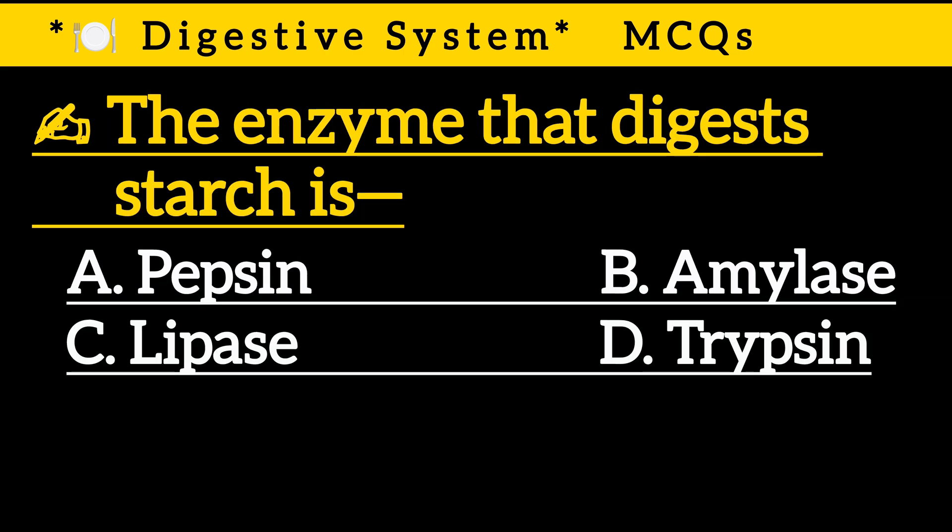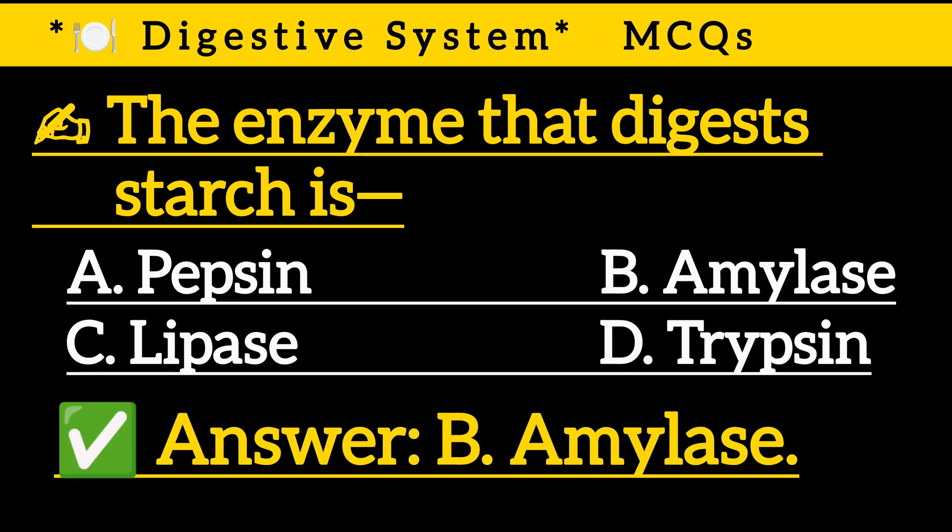Question 3: The enzyme that digests starch is — Option A: Pepsin, Option B: Amylase, Option C: Lipase, Option D: Trypsin. Correct answer is Option B: Amylase.